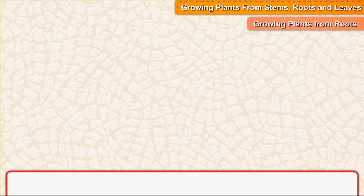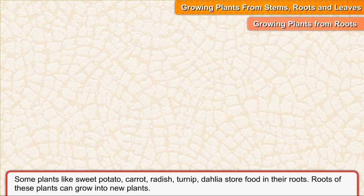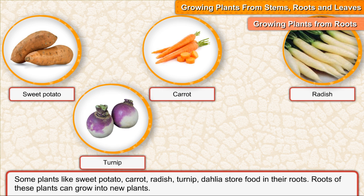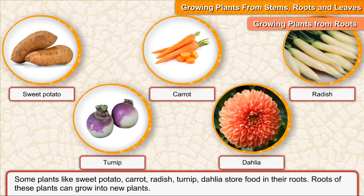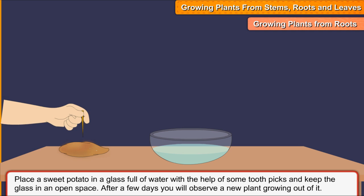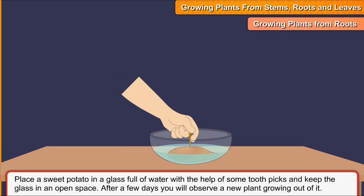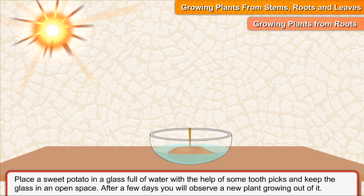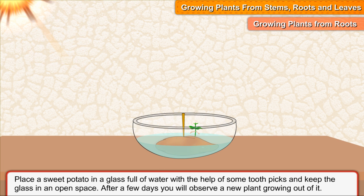Growing plants from roots. Some plants like sweet potato, carrot, radish, turnip, and dahlia store food in their roots. Roots of these plants can grow into new plants. Place a sweet potato in a glass full of water with the help of some toothpicks and keep the glass in an open space. After a few days, you will observe a new plant growing out of it.